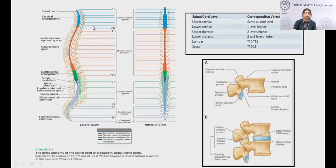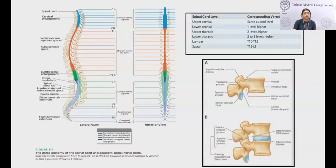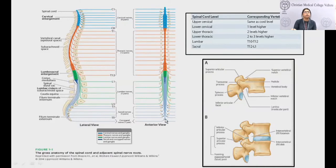From the dorsal root there is a sensory nerve, and from the ventral root there is a ventral nerve which, after exiting the spinal cord, joins to form a mixed spinal nerve. There are 31 spinal cord segments: cervical being 8, thoracic 1 to 12, lumbar 5, sacral 5, and coccyx 1.